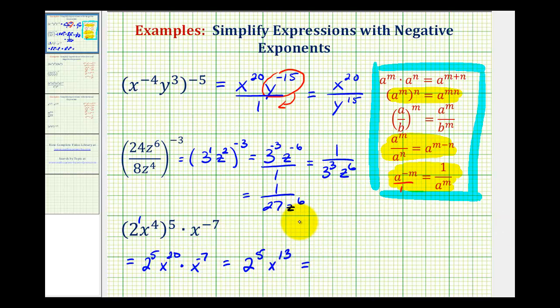And the last step here is to evaluate 2 to the 5th, which would be equal to 32. So we have 32 x to the power of 13.